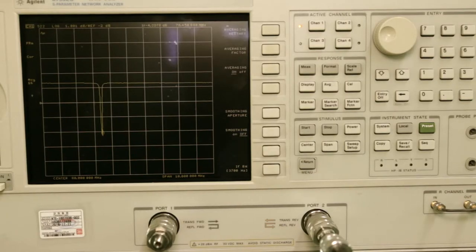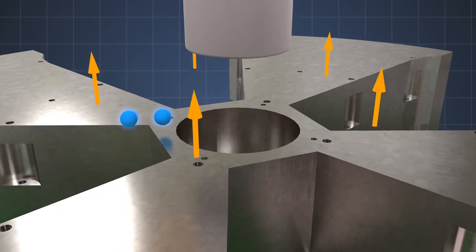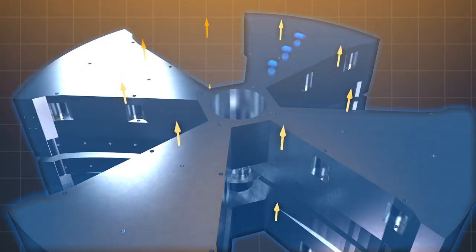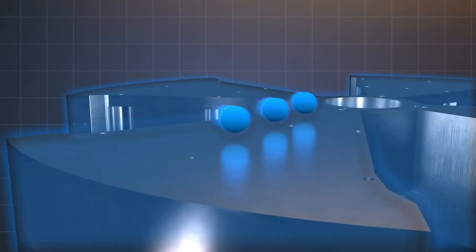Cyclotrons require very delicate and precise control of the alternating current frequency and magnetic field strength depending on the accelerating particle. If the control fails, the particle loses its rotational power and disappears inside the accelerator.